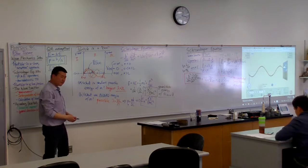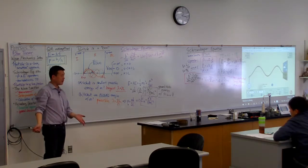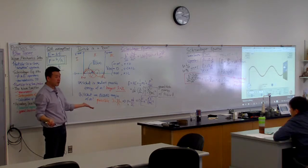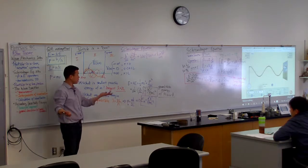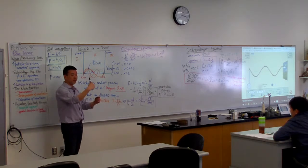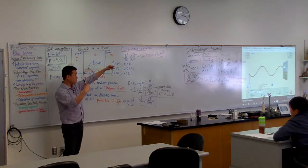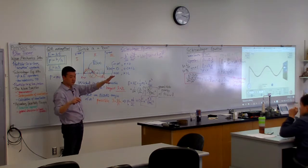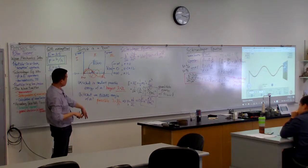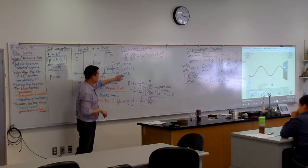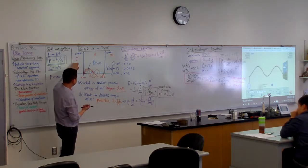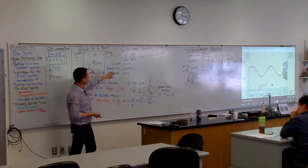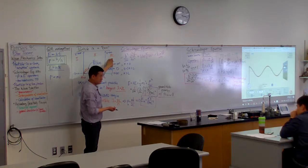It's something you've been doing since Physics 4A. When you have something happening discontinuously — like a kinematics problem where acceleration suddenly changes from one constant value to another — you break it up into parts. Same thing here: I broke it up into regions. You can write down the Schrödinger equation for each region.